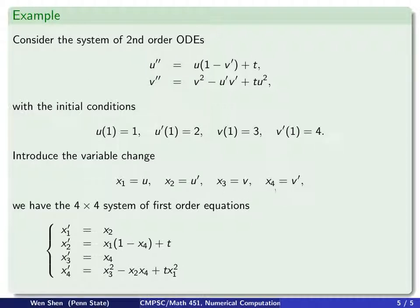Now look at the second set of variable change. x3 prime will be v prime, which will be x4. x4 prime will be v double prime. We need to use the equation. We will put the right-hand side down here, but write them in the new variables. v would be x3, u prime will be x2, v prime will be x4, and u is x1.